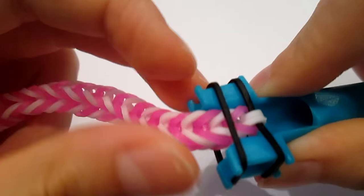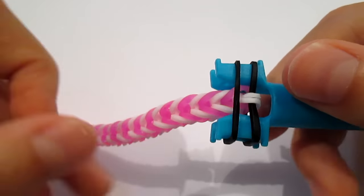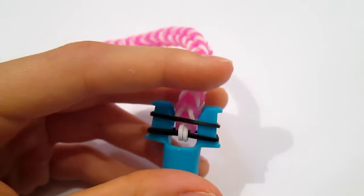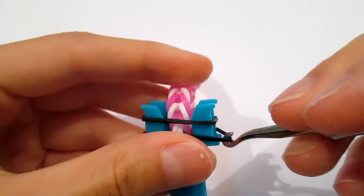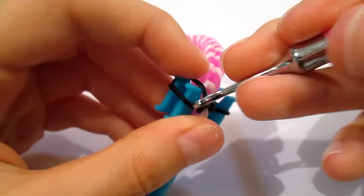And then, just place it on the pegs around it. And then loop it over like a usual single. Like that.